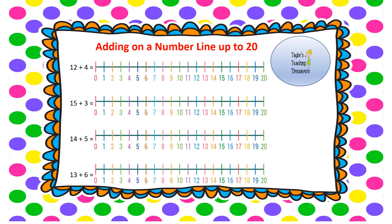We're going to continue adding on a number line, this time adding up to 20. We start with 12 add 4. Start with 12, jump on 4 spaces: 1, 2, 3, 4, and we land on 16. So 12 add 4 equals 16.